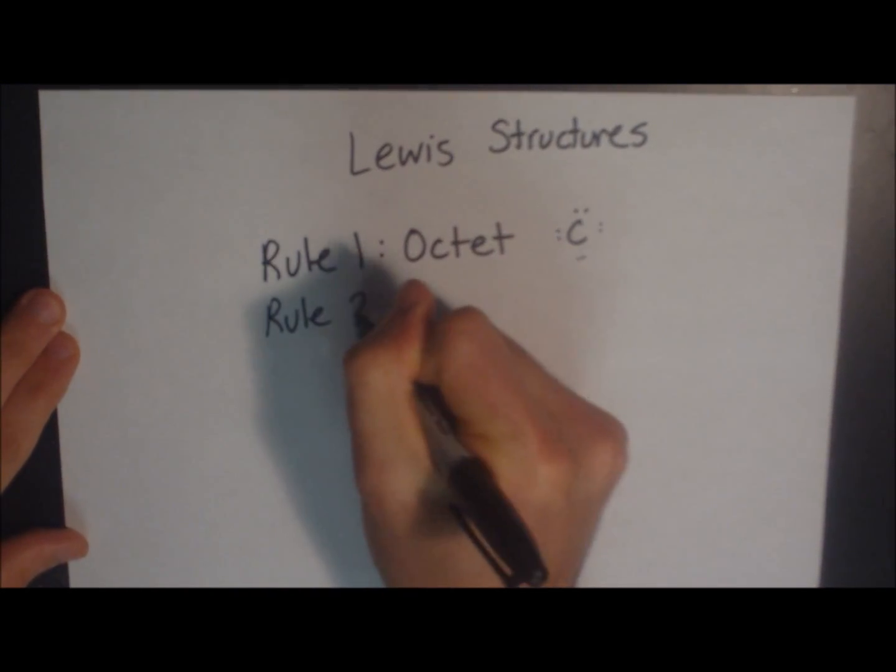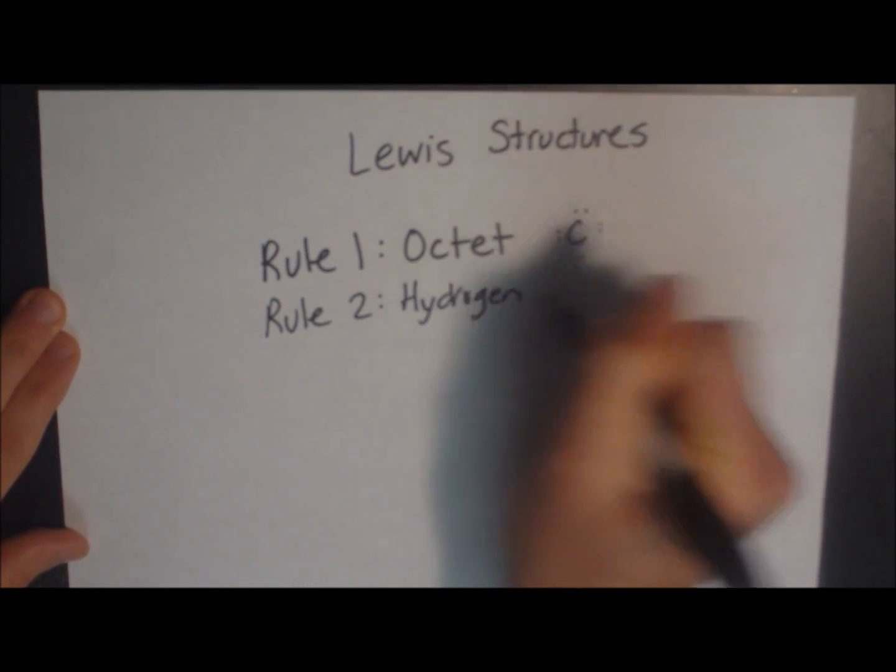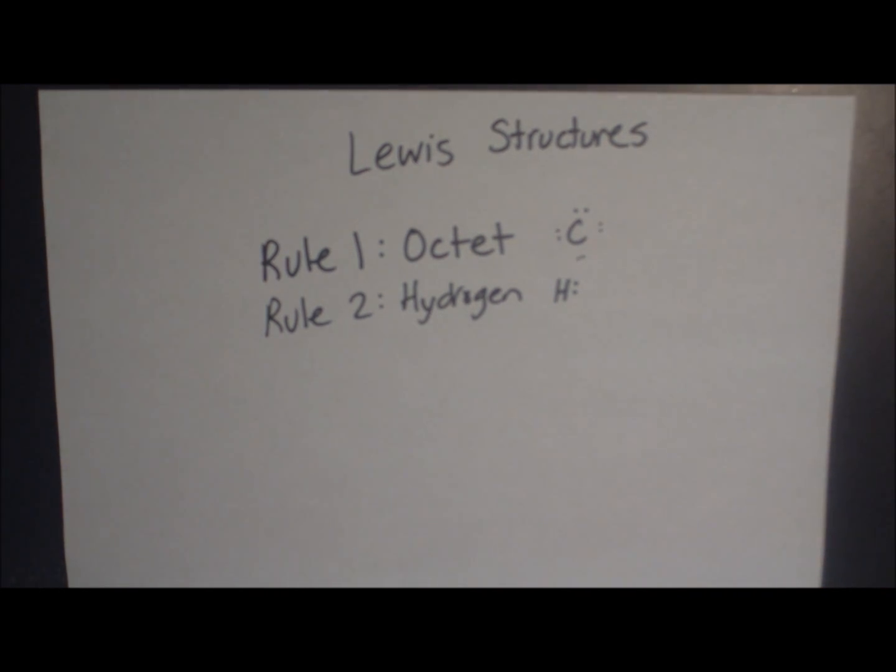The second rule is the hydrogen rule, which means that hydrogen likes to have two electrons around it. There are a few exceptions to these two rules, like boron, which likes to have six, but in most molecules, if you use these two rules, you'll be able to draw the correct Lewis structure.